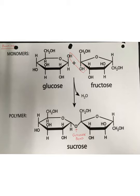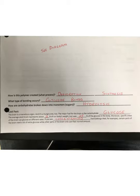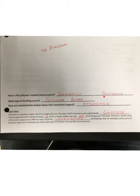Now let's finish up the rest of the notes. So at the very bottom, after we've drawn in our diagram — how is this polymer created? Anytime we create a polymer, something with many parts, the process is always going to be dehydration synthesis. The type of bond we made is a glycoside bond. Now, let's say we wanted to go the other way — take the sucrose molecule after we eat a lollipop and turn it back into glucose and fructose. How are carbohydrates broken down? We're going to do that via hydrolysis — we break it by adding back in that water molecule.